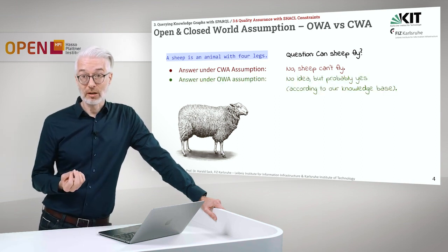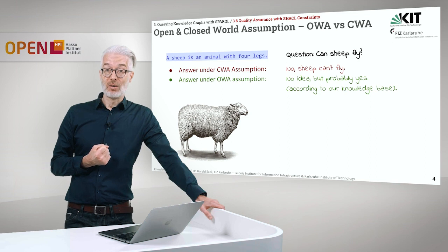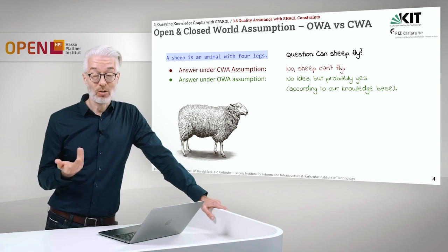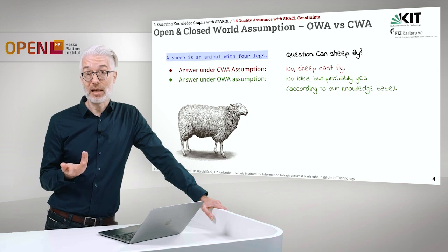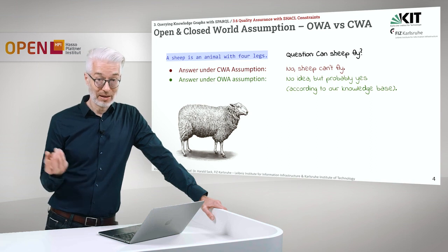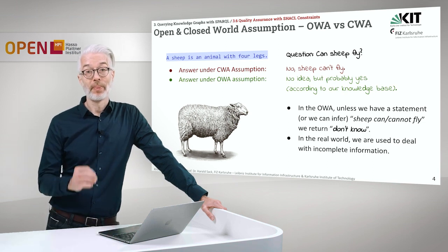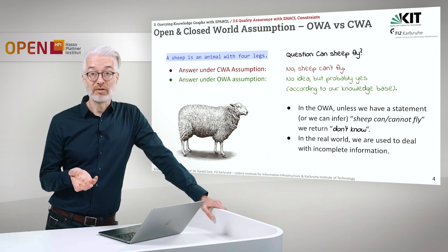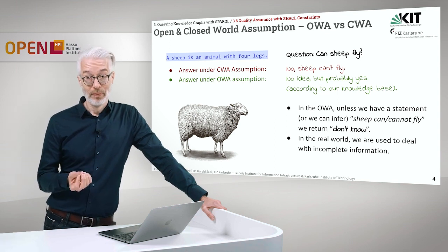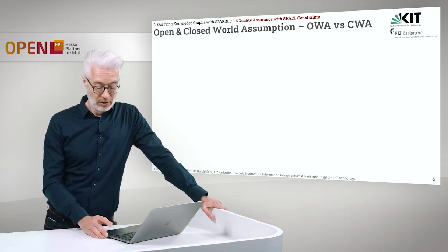However, under the open world assumption, it is quite the opposite. It is like in the real world. We see here sheep are animals with four legs. However, can they fly? We have no idea, because nobody told us. Probably they can. According to our knowledge base, we have to say we have no idea, but probably yes, so potentially it is possible, unless somebody states the opposite. That is the open world assumption, and that also is followed by all of the Semantic Web technology.